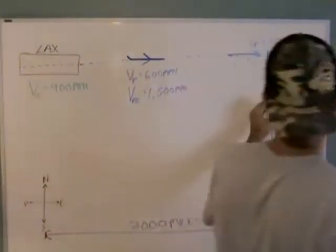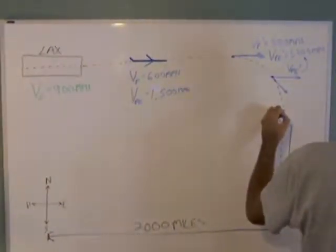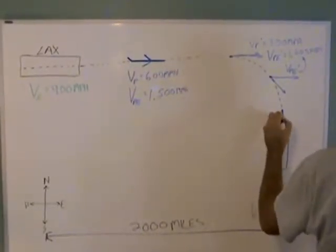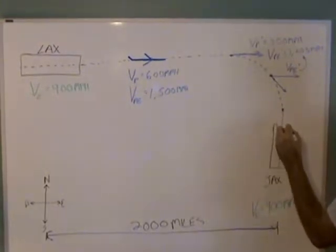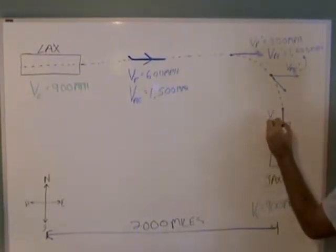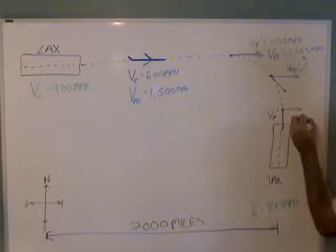So when you get down here, and you're trying to line up with the runway, you're still going 300 miles per hour towards it. You still got Vp' here, but you also have Vpe'.